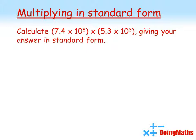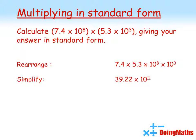Let's try a trickier example now. So 7.4 times 10 to the power of 8 times by 5.3 times 10 cubed. Again, we're going to give our answer in standard form. First, rearrange it so that we've got the 7.4 and 5.3 multiplying each other and the powers of 10 multiplying each other. Simplifying: 7.4 times 5.3 gives us 39.22.